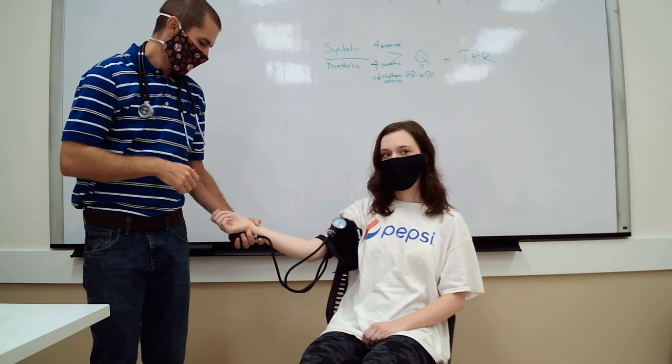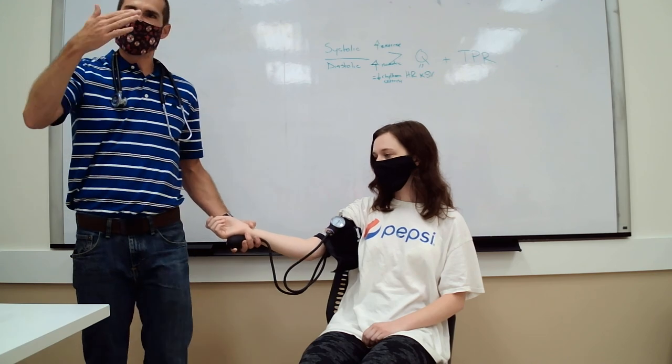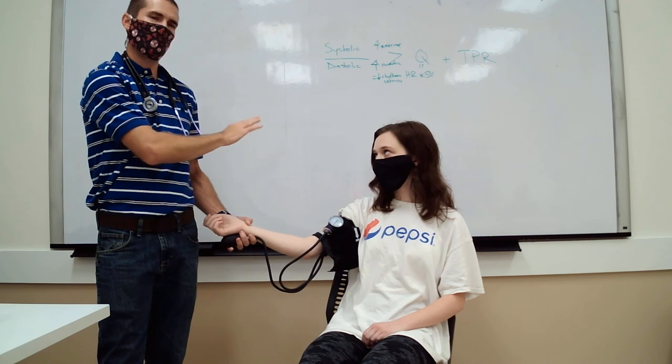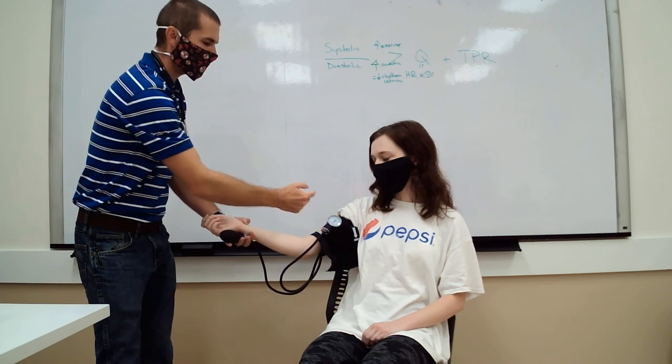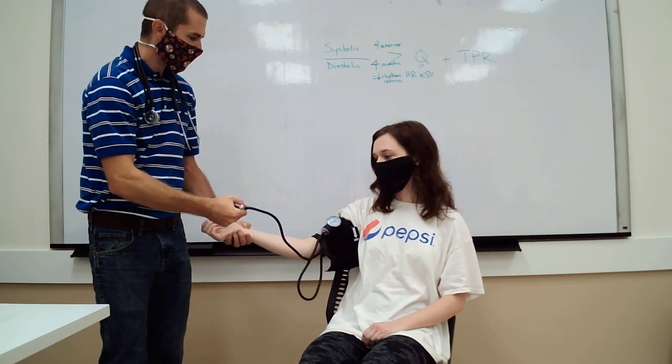Before actually taking blood pressure, I'll walk you through what to do. Since the pulse disappeared around 90 to 100, I'm going to inflate the cuff to 130. Once it's inflated, twist the valve to the left and slowly let the air out at about 2 to 3 millimeters of mercury per second — the needle should be consistently and slowly coming down, not too fast and not barely moving.